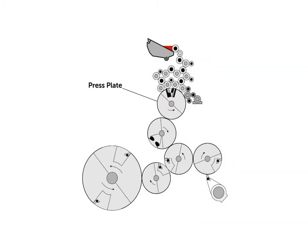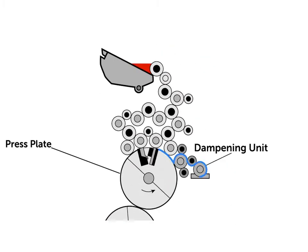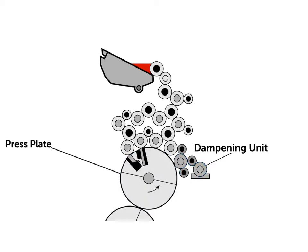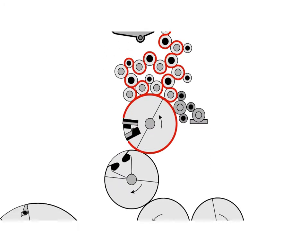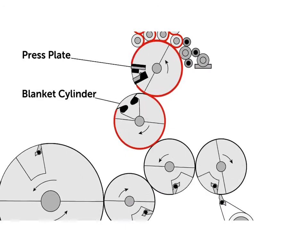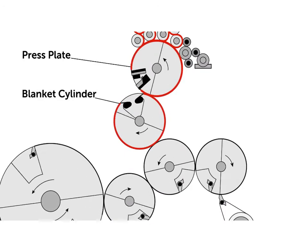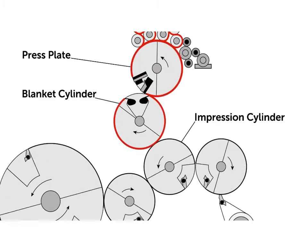As the press plate rotates, its first point of contact is the dampening unit, which has a mixture of water and other chemicals that dampens the non-image area of the press plate. The press plate then passes the inking unit — starting from the ink fountain, the ink passes through multiple rollers called a roller train, which then sticks to the image area of the press plate. It is then passed to the blanket cylinder, which squeezes the water out and the inked image area is picked up, and then passed to the final cylinder called the impression cylinder.